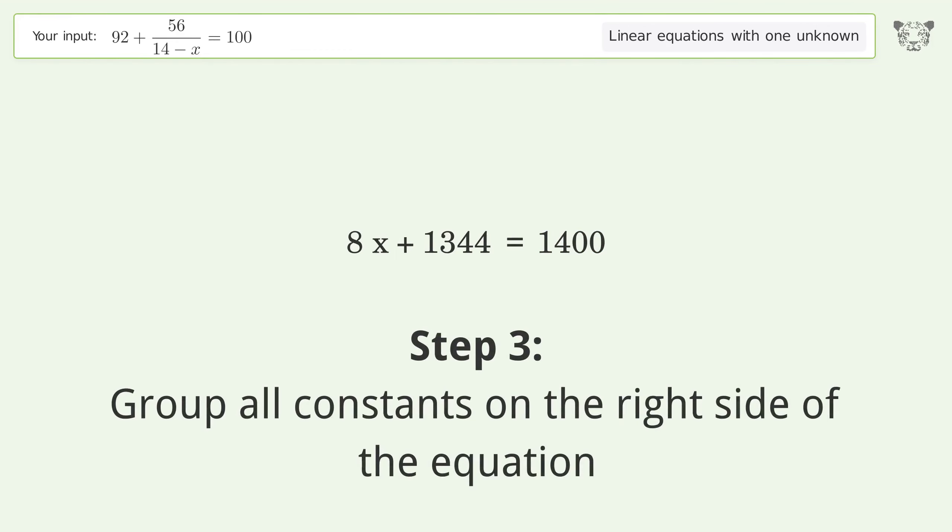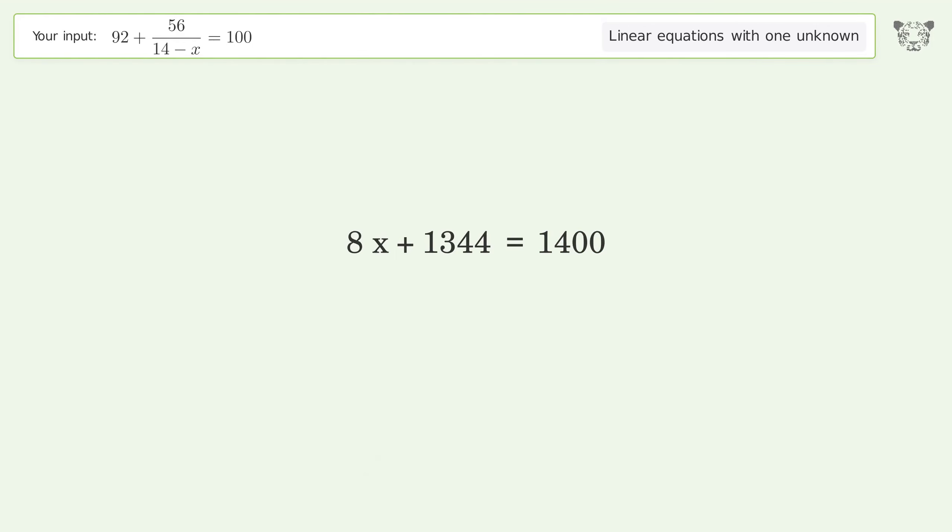Group all constants on the right side of the equation. Subtract 1344 from both sides.